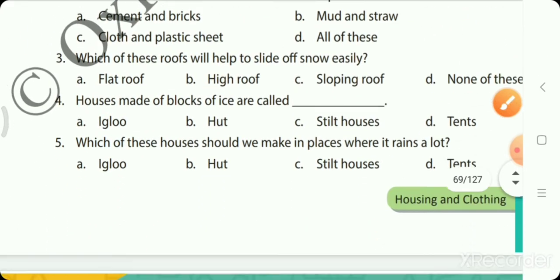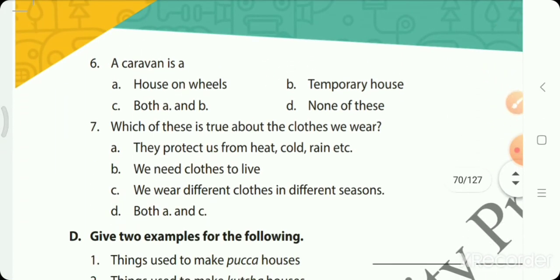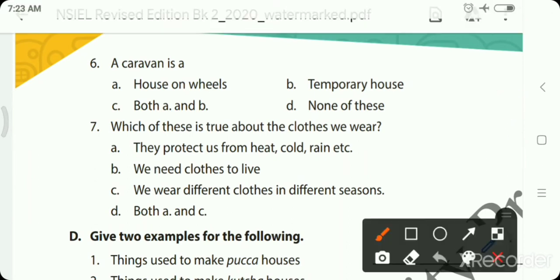A caravan is a house on wheels, temporary house, both A and B, or none of these? Caravan is a house on wheels, yes, and a temporary house. So both A and B is the correct answer.